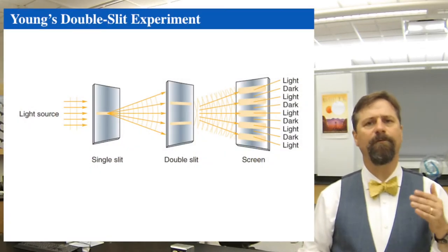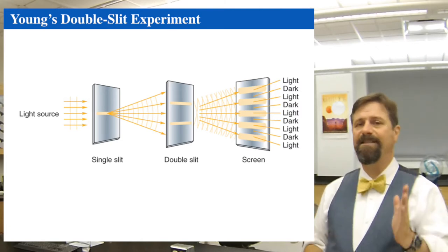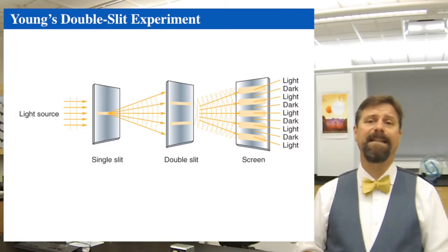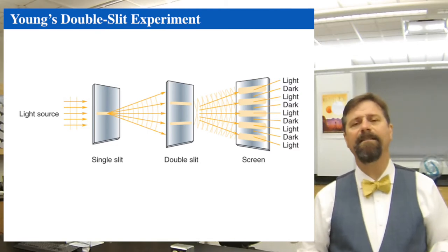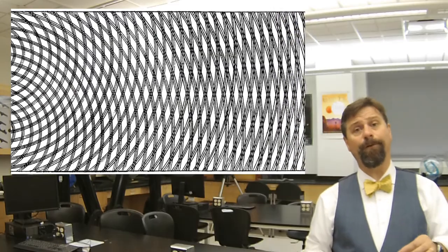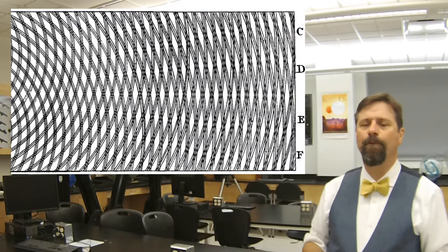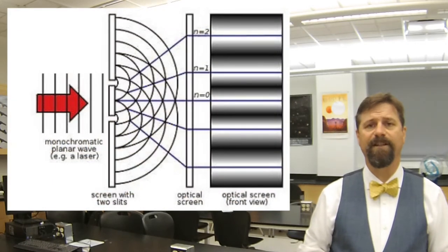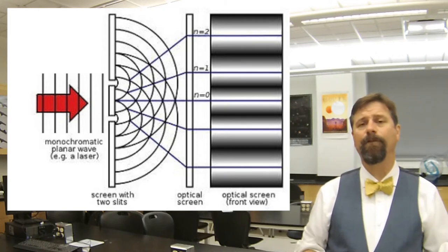Around 1801, Young performed the famous double-slit experiment, where he put a slit inside a barrier to create a single-source image, then allowed that light to spread out diffractively and impact two other slits. Those two slits then each act as sources. On the far side you see a constructive and destructive interference pattern. A continuous source goes through a slit, then through a double slit, making interference patterns — which can only occur if light has wave properties. Young's experiment proved that light actually has wave properties.